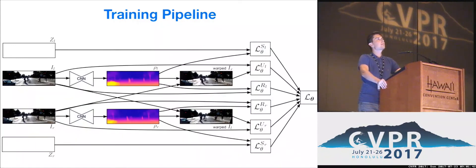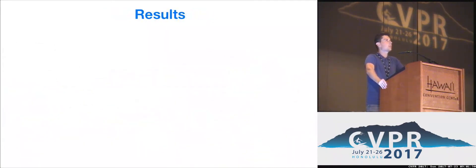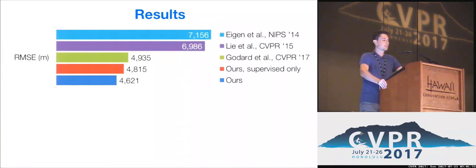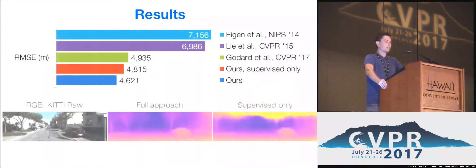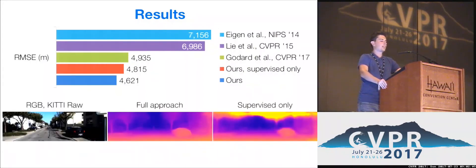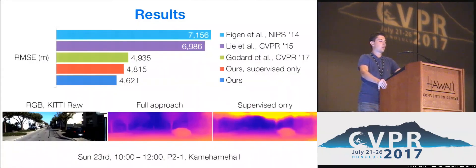Overall, our final loss is simply the linear combination of the above-mentioned terms computed for both left and right frames. Such a combination of cues allows us to achieve state-of-the-art results on the Eigen split of the KITTI dataset. Here, you can see the comparison of our approach to other methods and to the supervised-only version of our pipeline. For instance, one can see that supervised-only predictions are of low quality in upper image parts. I invite you to come to our poster number 7 at the following poster session, where you can get more details about our approach and answers to your questions. Thank you for your attention.